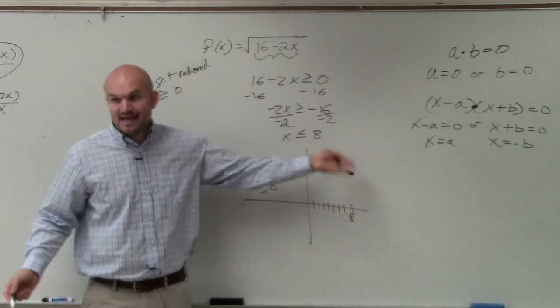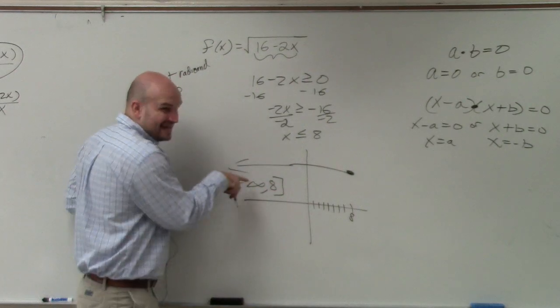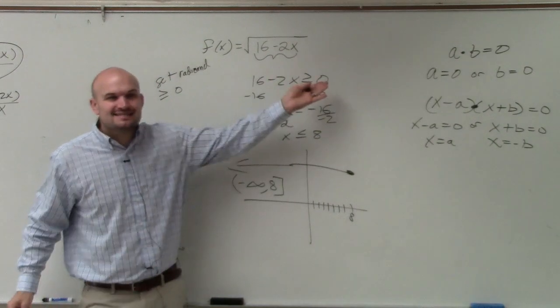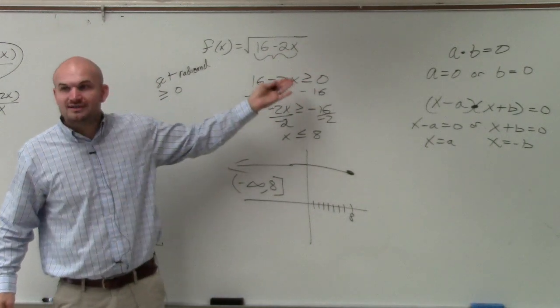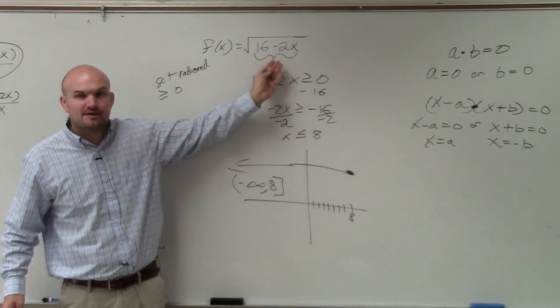Now, can it equal 8, though? Yes. Since it can equal 8, we use a bracket. It can't equal negative infinity, so that's still a parentheses. Remember in that last example, it couldn't equal negative 3 7ths because if it equaled negative 3 7ths, that made the denominator equal to 0.